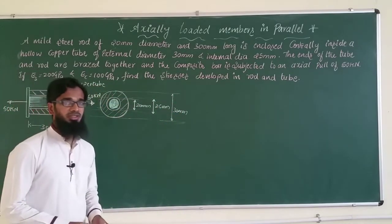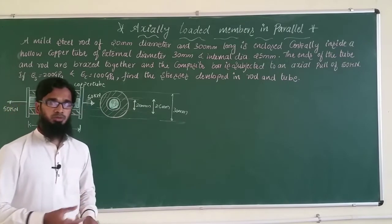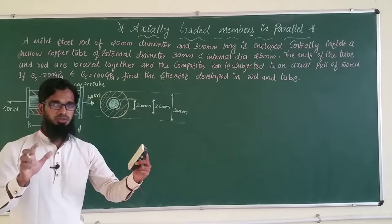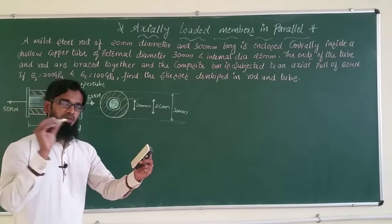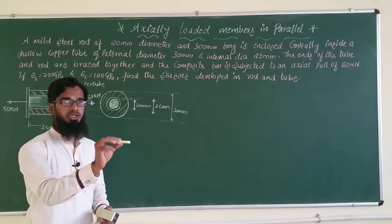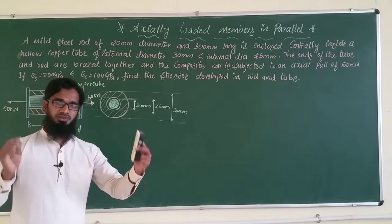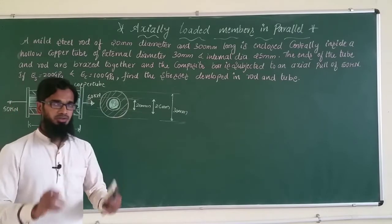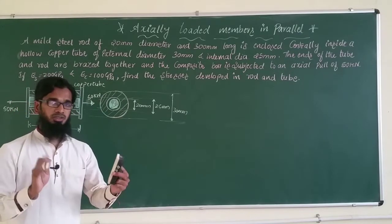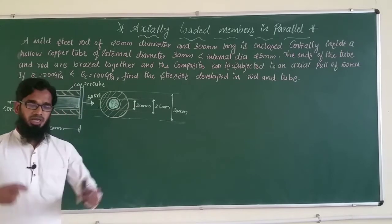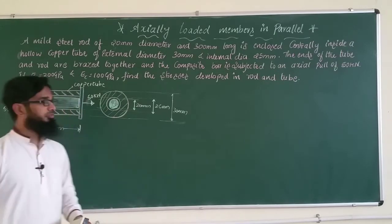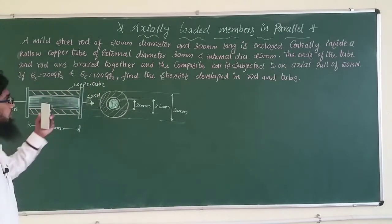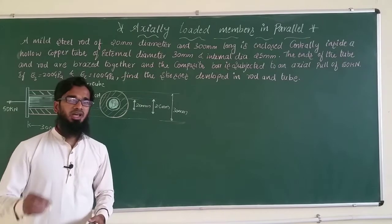The ends of the tube and rod are brazed together. So there is a hollow copper tube and a solid steel rod inserted inside it, with the same length. After brazing — after joining these two — a load is applied.